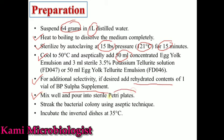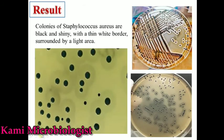Once mixed well, we pour it into sterilized Petri plates at a temperature of 50 degrees Celsius. Once the media is solidified, we streak the bacterial colony using an aseptic technique on this media. After streaking, the plates are incubated at 37 degrees Celsius or 35 degrees Celsius for 24 hours. The plates should be in inverted position to prevent moisture.